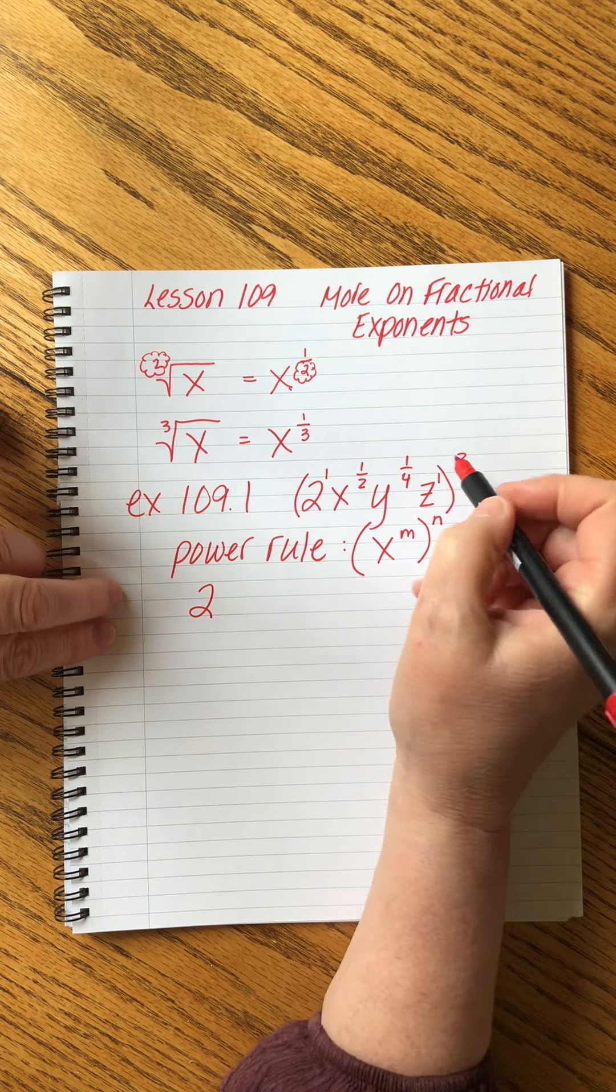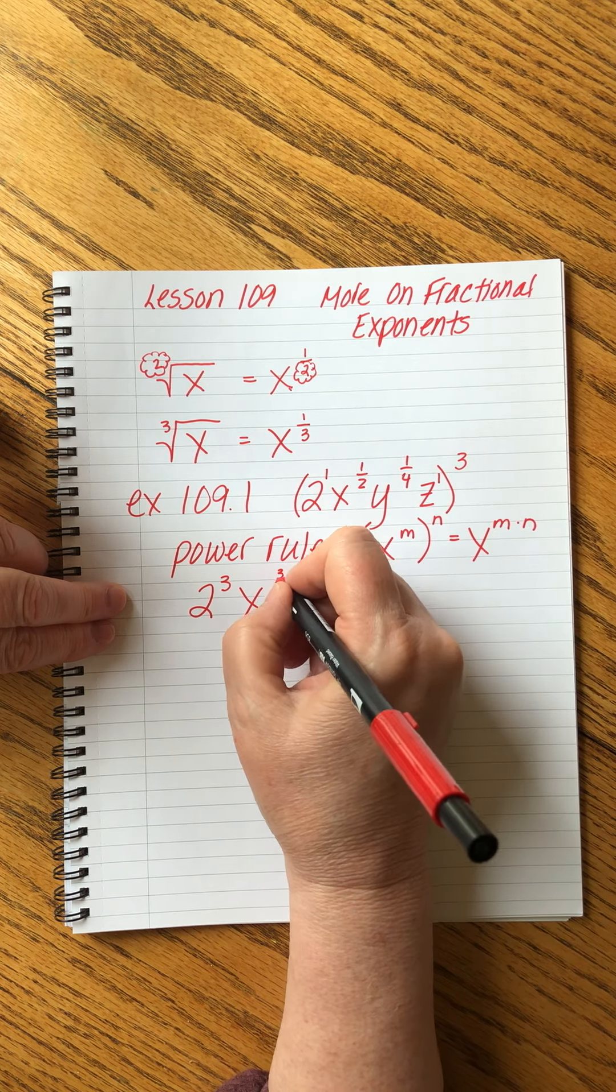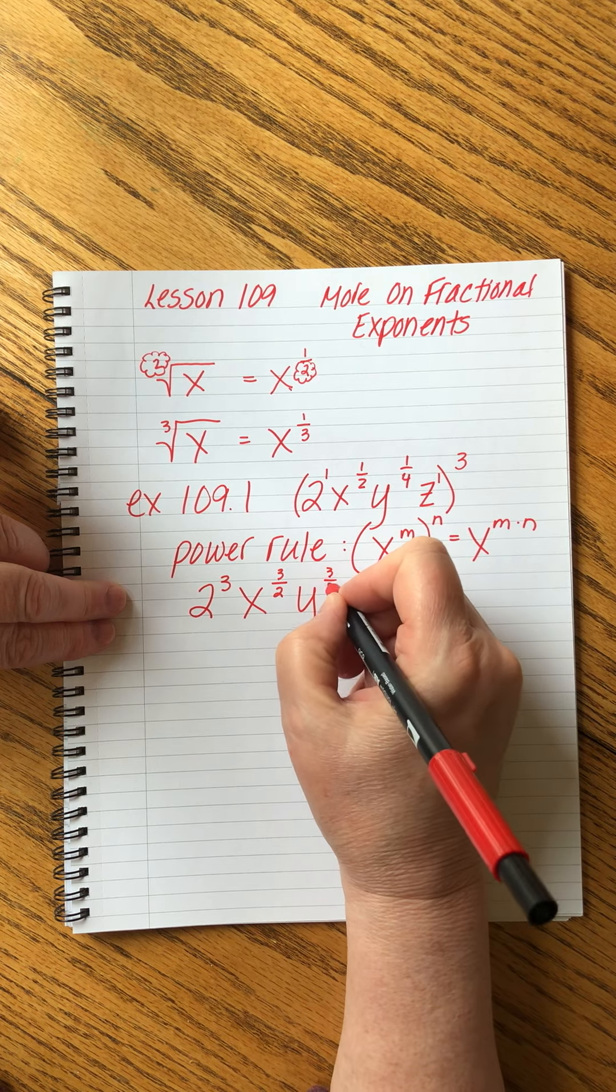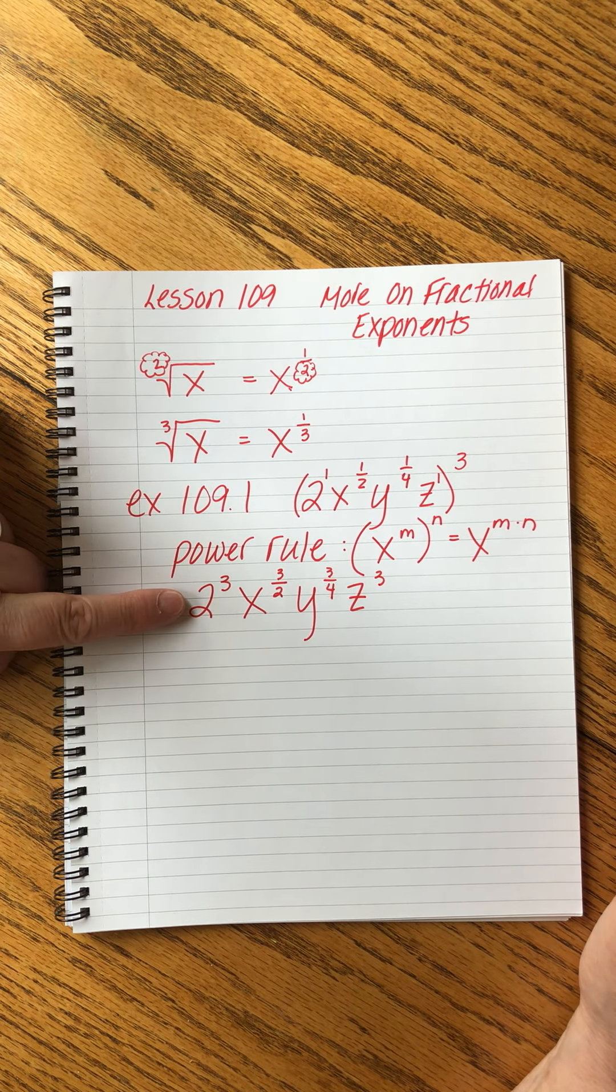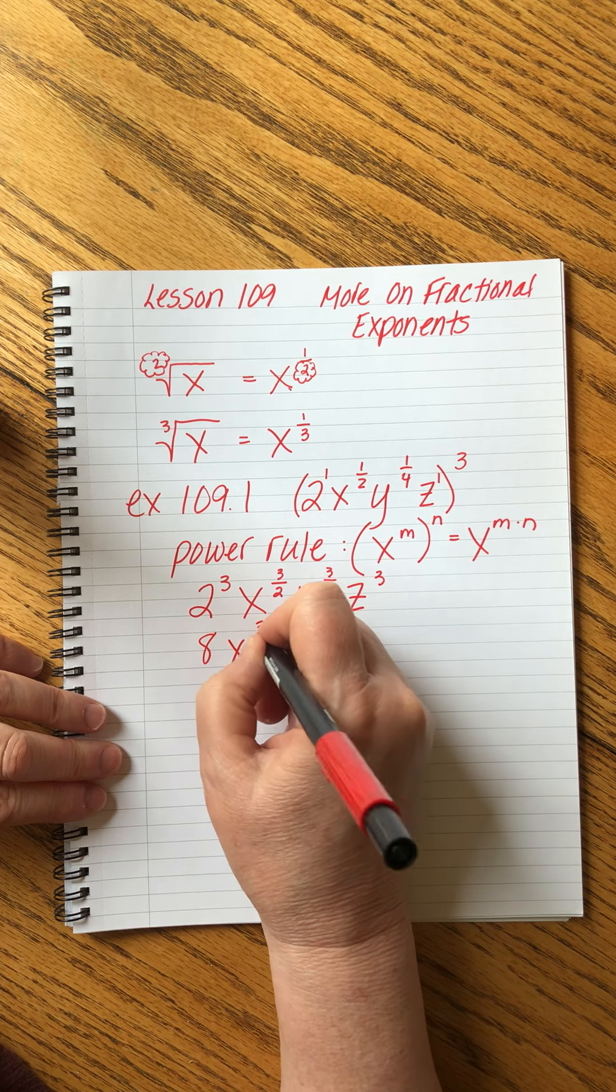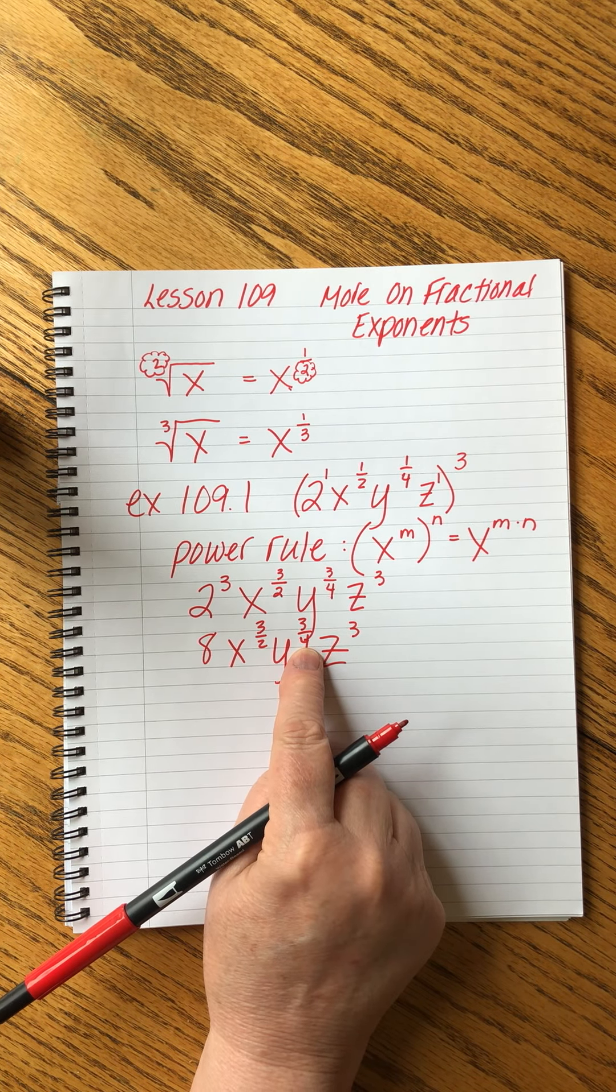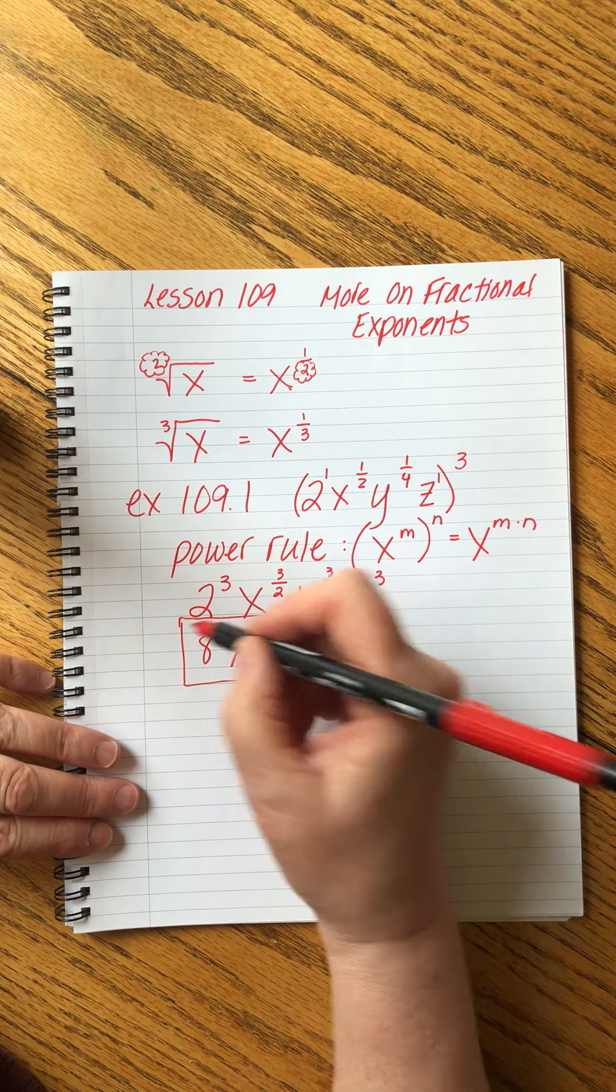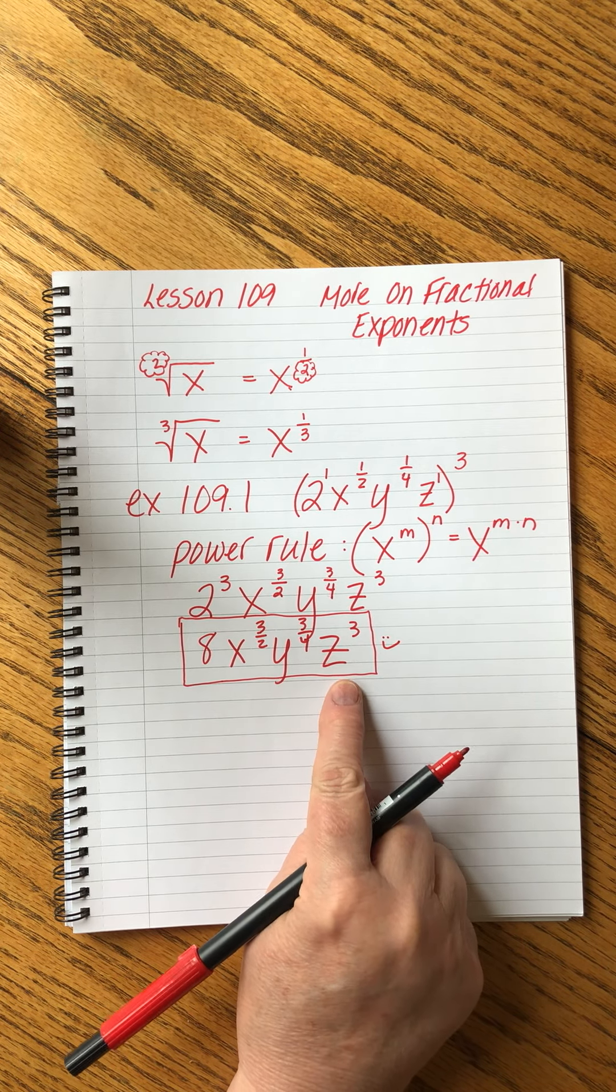Now we're going to rewrite each of the bases with their new exponent. Three times one is three. X one half times three, that's three over two. Remember when we multiply fractions, we go straight across the top, straight across the bottom. Y will be three over four, and Z will be to the third power. The only thing that we're going to do is simplify this because we can calculate two to the third power, right? That's eight. And then we'll have X to the three halves, Y to the three fourths, Z to the third. These fractional exponents, you have to be so careful to make them not look like regular fractions. So be very careful in how you write this kind of problem. This is correct. This is what we have done in the past.